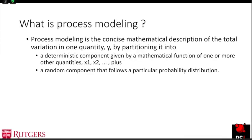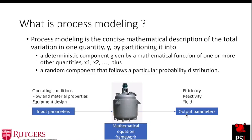So what is process modeling? One could say it is a concise mathematical description of an output quantity that is of utmost importance with respect to a deterministic input parameter plus a random component that describes the uncertainty such as process disturbance. An example would be a reactor where you have output parameters such as efficiency, yield, or reactivity to be monitored with respect to input parameters like process conditions, raw material properties, and equipment design. Having a mathematical equation framework to represent this relationship is what process modeling is all about.